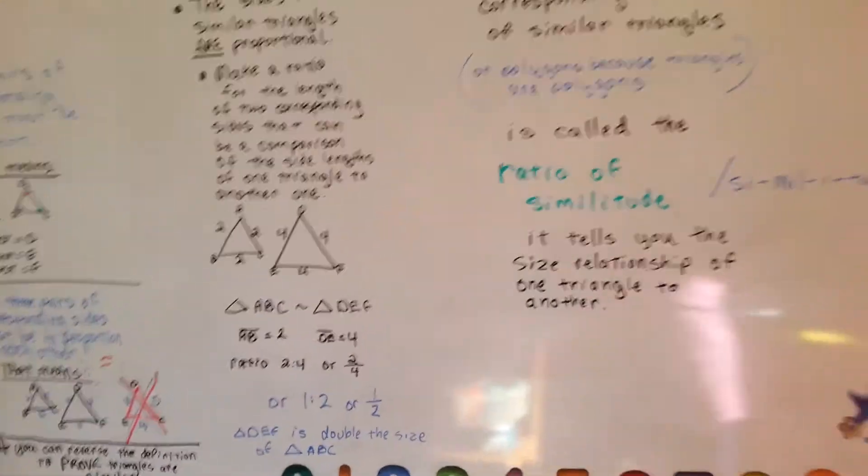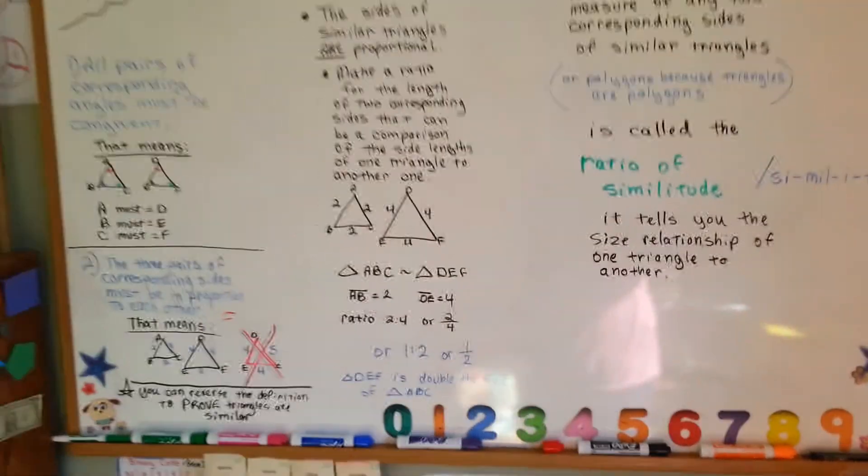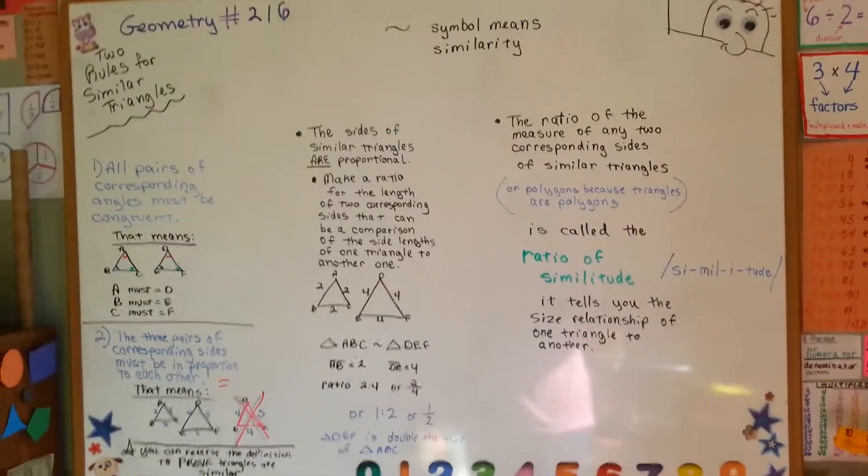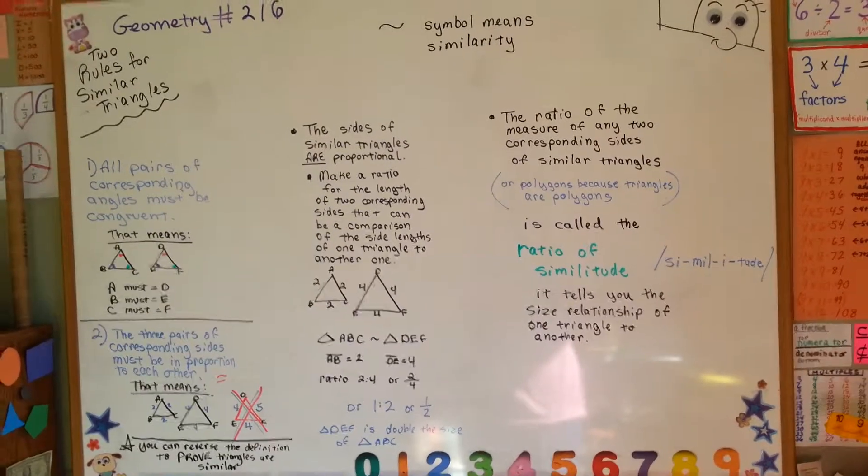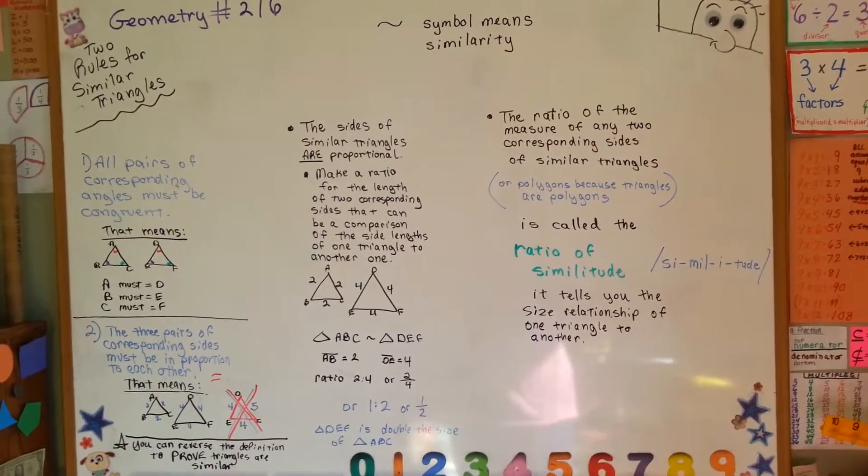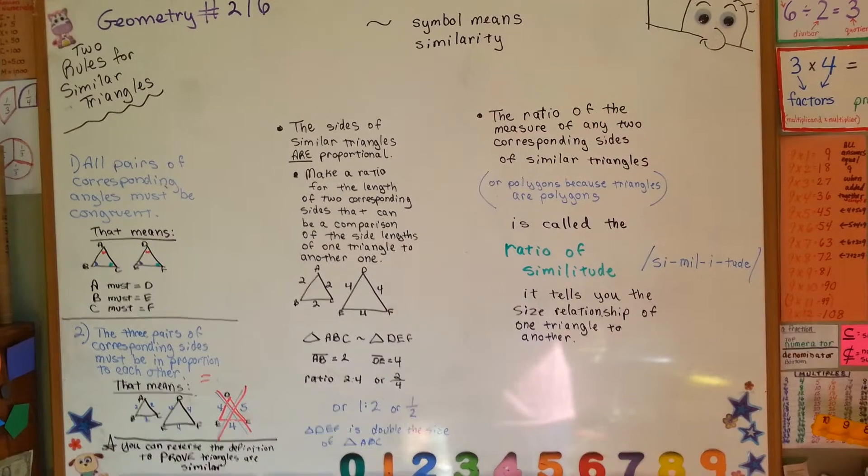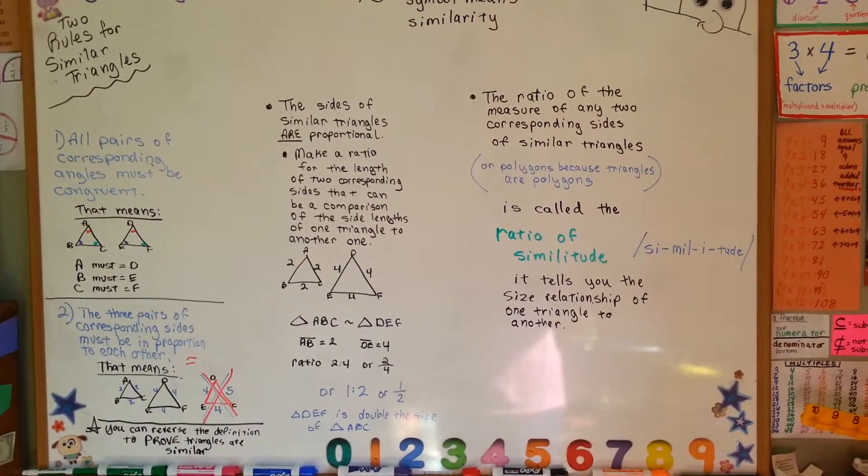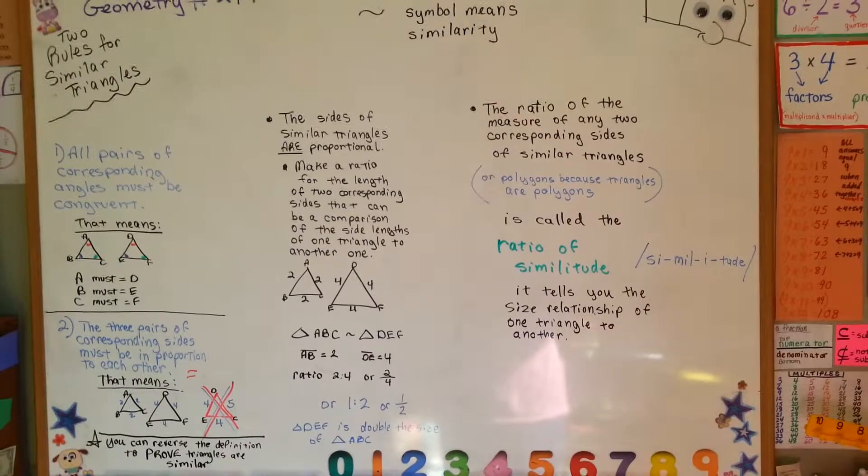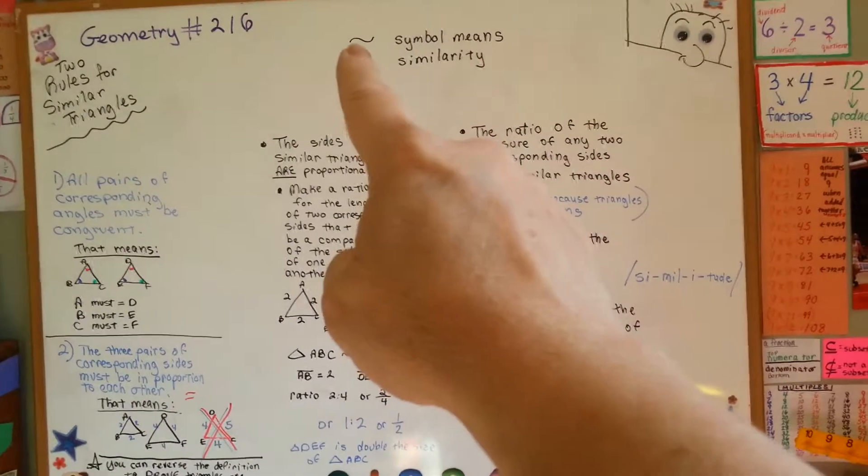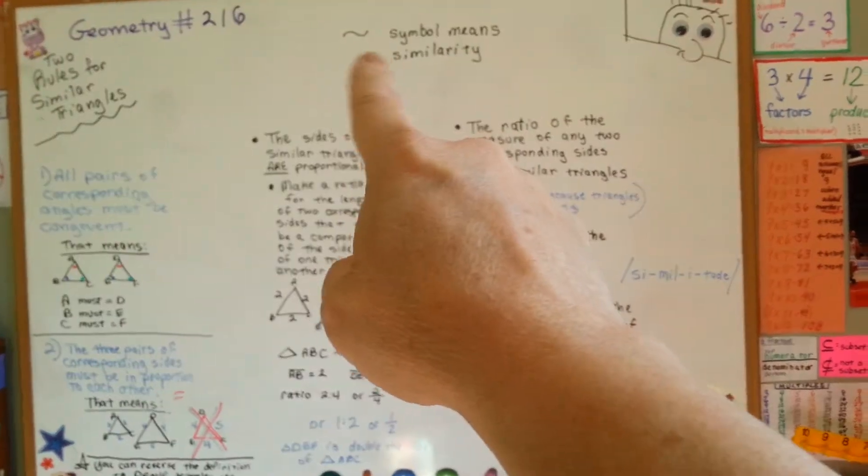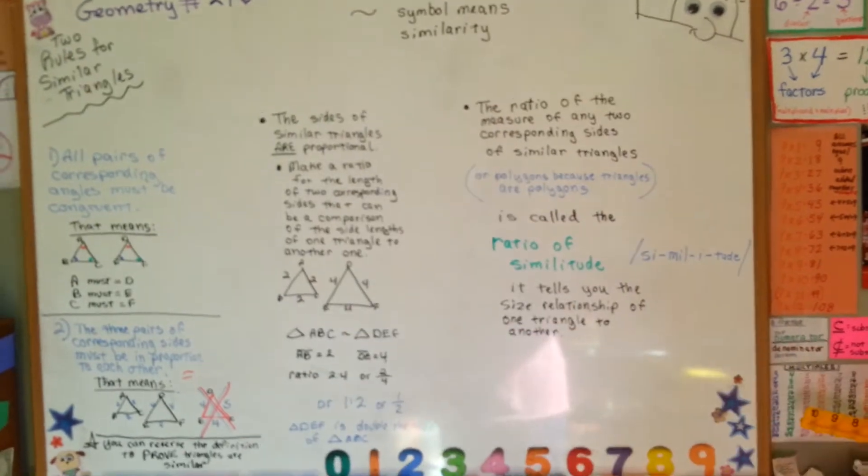Does that make sense to you? I hope so. I hope I wasn't too confusing. I know this all can be confusing sometimes, but that will tell you the two rules for similar triangles. The ratio of similitude, new phrase for you. And now you know the symbol for something that's similar, for similarity.